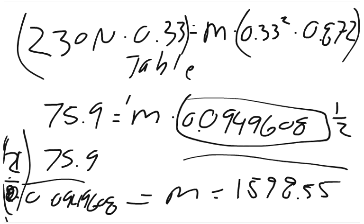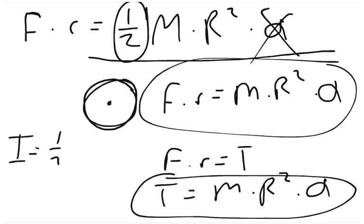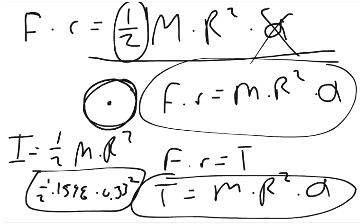That gives us the answer for part B, and we're going to take that. We need to define what I is. I is anything in this half of the equation except for angular acceleration. In this case, I equals one-half M times R squared. We know what M is now. It's 1598.55. So we times that by one-half: one-half times 1598 times R squared, and R is 0.33. We're going to square that. That is our moment of inertia, which equals 87.04.